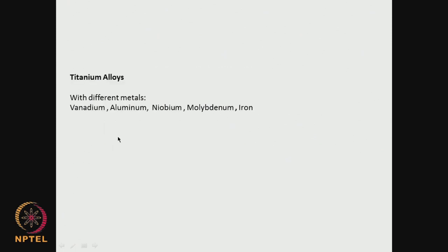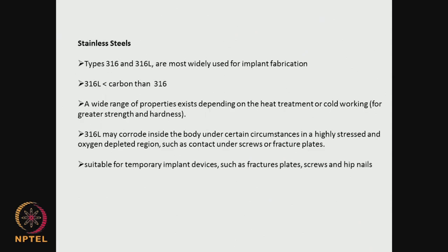Titanium alloys — there are many other metals like vanadium, aluminium, niobium, molybdenum, and iron that are mixed with titanium to form alloys. These alloys have very good properties — they reduce the modulus further and also give shape memory properties. Stainless steel of course is very cheap, so it is widely used — 316 and 316L. The 'L' means it has less carbon, so it is much better than 316. 316L is used in many implants. They give good strength and hardness.